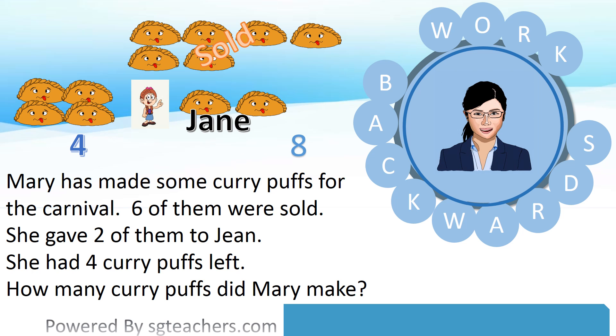Now we have two numbers: eight and four. Add them together — four plus eight equals twelve. Therefore, Mary made twelve curry puffs.